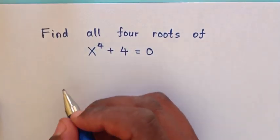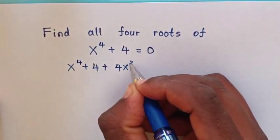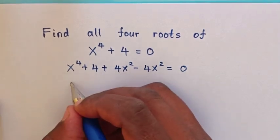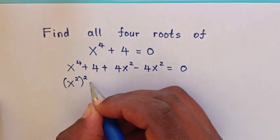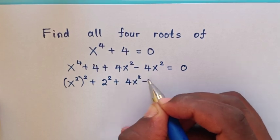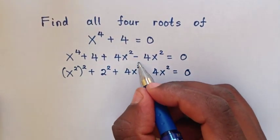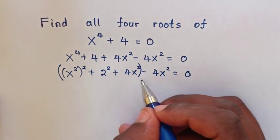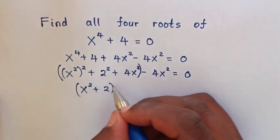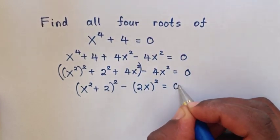First, we turn this into a perfect square: x⁴ + 4 + 4x² - 4x² = 0. Then x⁴ is the same as (x²)², and 4 is 2², so we have (x² + 2)² - 4x². Then placing brackets, the expression becomes (x² + 2)² - (2x)² = 0.